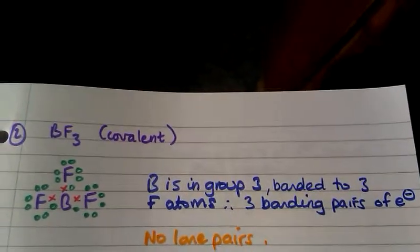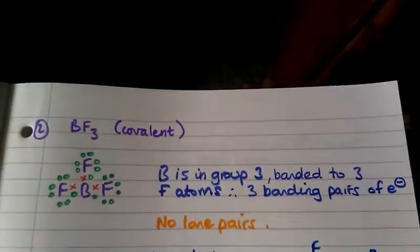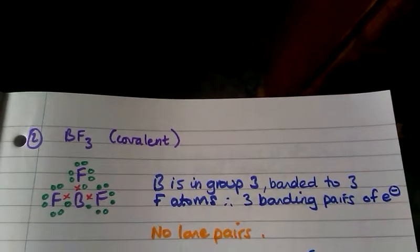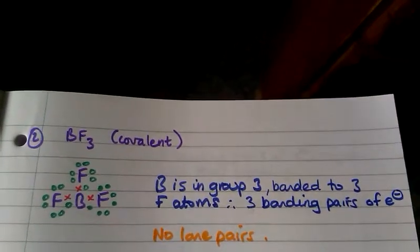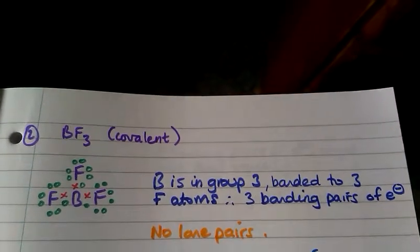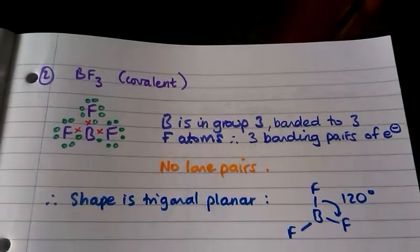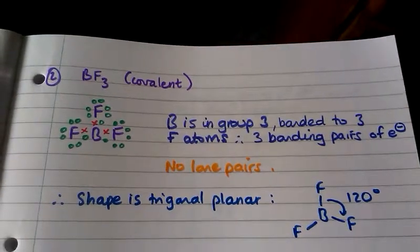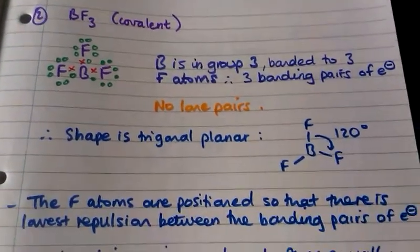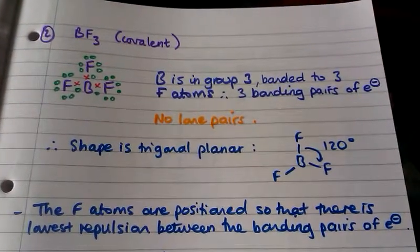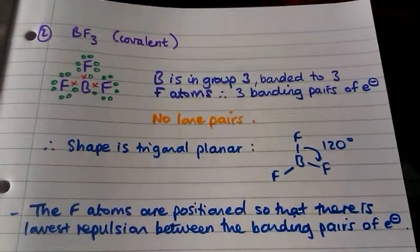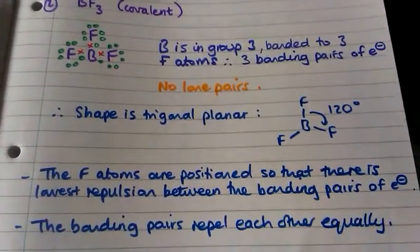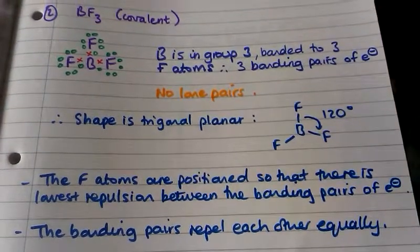Second example: BF₃, which is covalent. Boron is in group 3 in the periodic table and is bonded to three fluorine atoms, so it has three bonding pairs of electrons and no lone pairs. The shape of this molecule is trigonal planar where the bond angle is 120 degrees. The fluorine atoms are positioned to give the lowest repulsion between the bonding pairs, which repel each other equally.